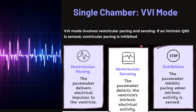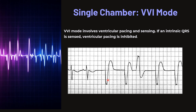VVI mode involves ventricular pacing and ventricular sensing. If an intrinsic QRS is sensed, ventricular pacing is inhibited. The pacemaker delivers electrical impulses into the ventricle and detects ventricular intrinsic activity. If there is intrinsic electrical activity, the pacemaker inhibits its output and no pacing occurs. If there is no intrinsic activity and no QRS complex is sensed, there will be a pacing spike with a ventricular response.